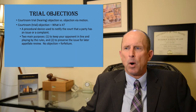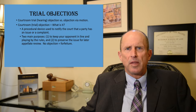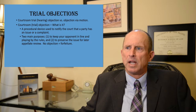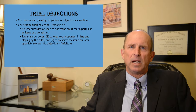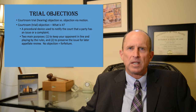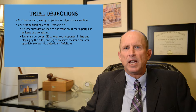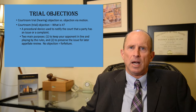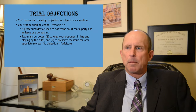One purpose is to keep your opponent in line and playing by the rules — your opponent has done something improper and you want to make an objection. The other important reason is to preserve the issue for later appellate review, because if you fail to object or make an improper objection, you may forfeit your ability to have the matter reviewed on appeal — called forfeiture. Those are the two main reasons you need to make good and proper objections.